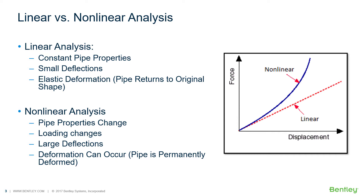In general, most supports in the real world contain gaps and might offer some frictional resistance. These effects are considered to be nonlinear, since the response of the support may change depending upon the load and how the load is sequenced with other loads. For linear analysis, we assume constant pipe properties, small deflections, and elastic deformation, giving a proportional response to the application of the load.